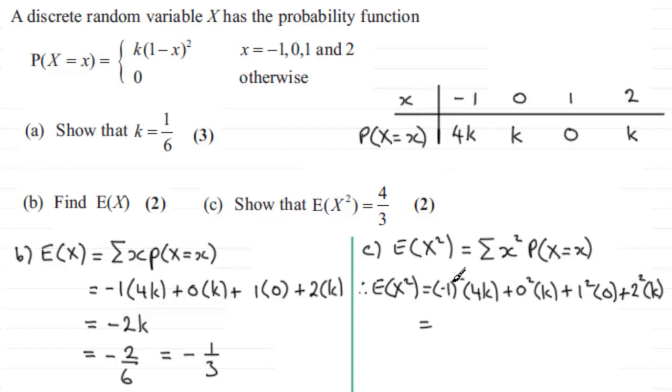So what does this come to? Well this comes to 1 times 4k which is 4k. We've got 0 here and 0 here and plus another 4k. So in other words we've got a total of 8k. So that's 8 times 1 sixth which is going to be 8 sixths and 8 sixths reduces down to 4 thirds what we had to show here.